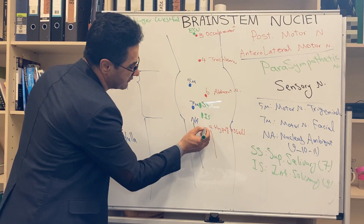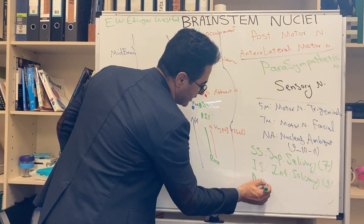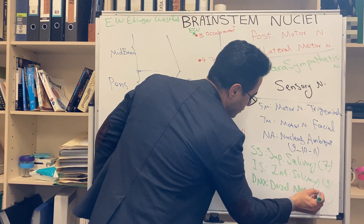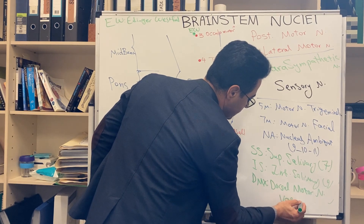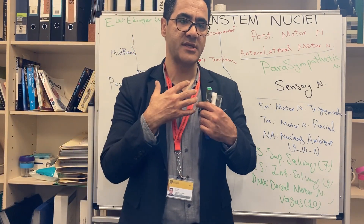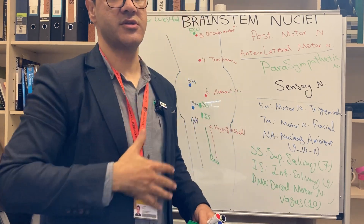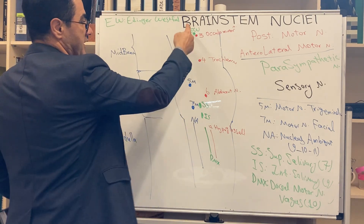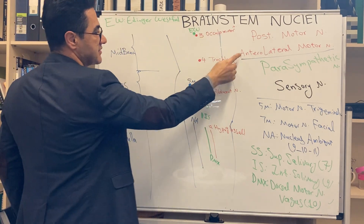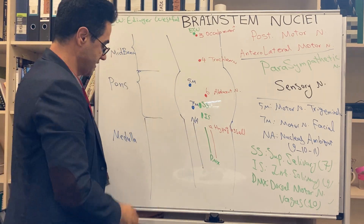At the same column in the medulla, we have another parasympathetic nucleus. It is known as the DMX — dorsal motor nucleus of vagus. Vagus means cranial nerve 10; it's parasympathetic 10. It supplies the smooth muscles of the pharynx, larynx, heart, lung, and gut — supplying many anatomical structures in the viscera and at the neck. So we have four parasympathetic nuclei: Edinger-Westphal in the midbrain, superior and inferior salivary in the pons, and DMX in the medulla.